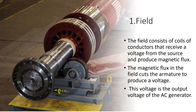Number 1: Field. The field consists of coils of conductors that receive a voltage from the source and produce magnetic flux. The magnetic flux in the field cuts the armature to produce a voltage, which is the output voltage of the AC Generator.